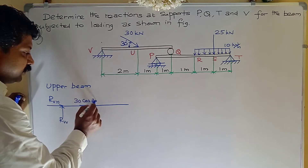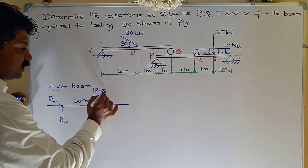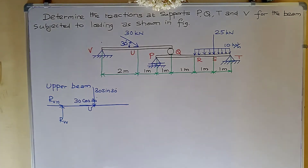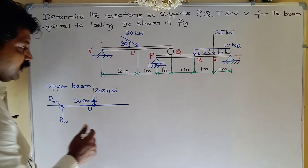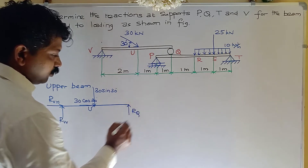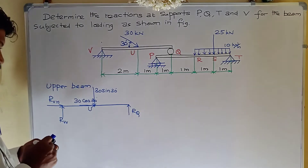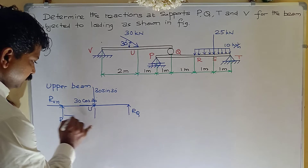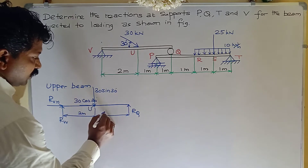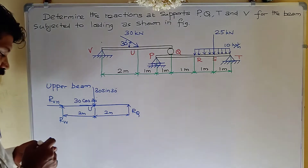The force at U is resolved into components: horizontal component is 30 cos 30°, and vertical downward component is 30 sin 30°. At point Q, there is a roller support which offers only one reaction — vertically upward, RQ. The span dimensions are two meters and two meters.